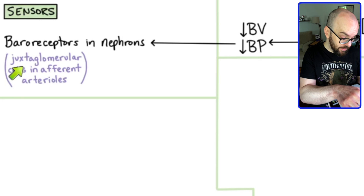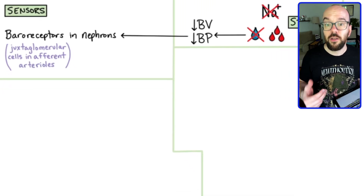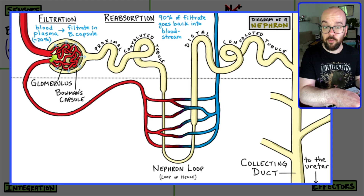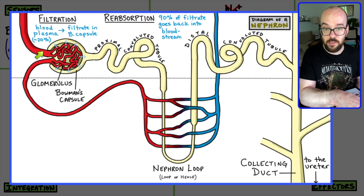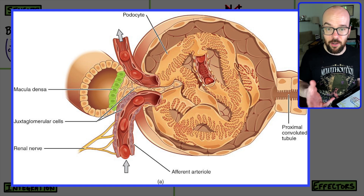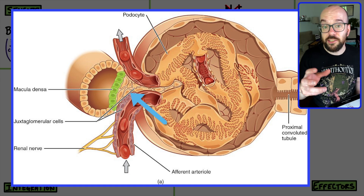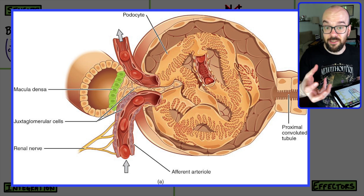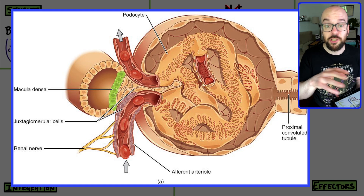Juxta means right next to — like juxtaposition — and glomerular refers to the glomerulus, which is the site of filtration in the nephron. Here's the afferent arteriole, the glomerulus where fluid from the blood is filtered out, and the efferent arteriole. The juxtaglomerular cells are right in that afferent arteriole and utilize stretch receptors. As blood travels through, if these cells are stretching apart, that detects high blood pressure; if there's very little stretch, that detects low blood pressure, which is what we're looking at in this case.